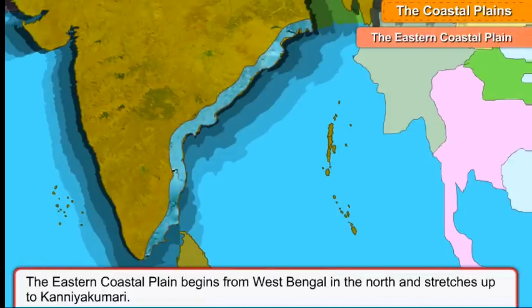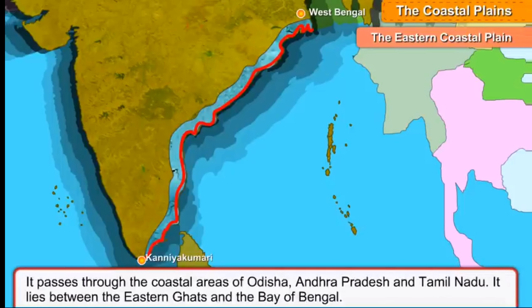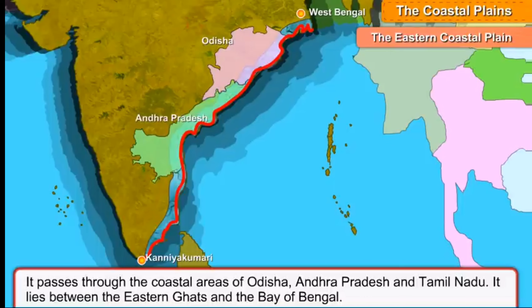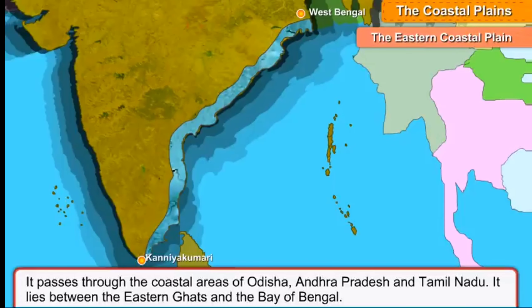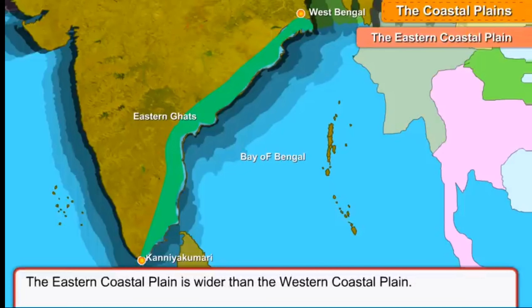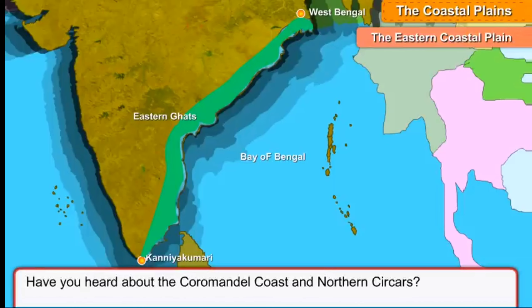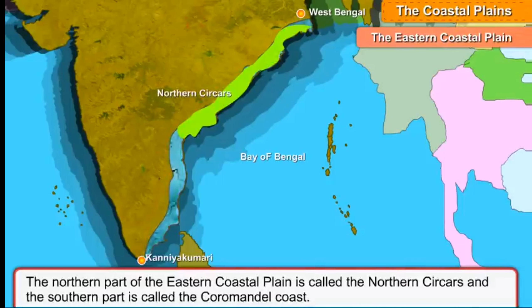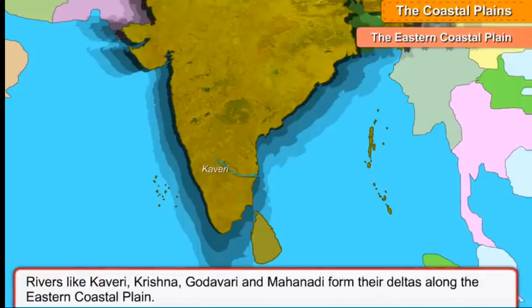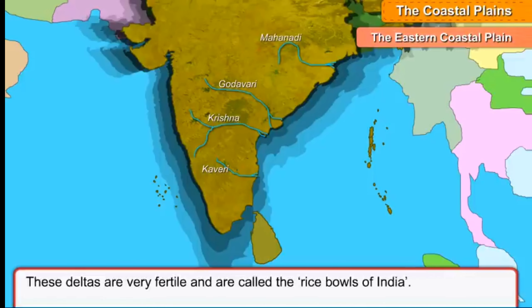The Eastern Coastal Plain begins from West Bengal in the north and stretches up to Kanyakumari. It passes through the coastal areas of Odisha, Andhra Pradesh and Tamil Nadu. It lies between the Eastern Ghats and the Bay of Bengal. The Eastern Coastal Plain is wider than the Western Coastal Plain. The northern part is called the Northern Sarkars and the southern part is called the Coromandel Coast. Rivers like Kaveri, Krishna, Godavari and Mahanadi form their deltas along the Eastern Coastal Plain. These deltas are very fertile and are called the rice bowls of India.